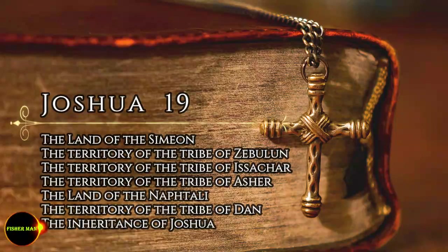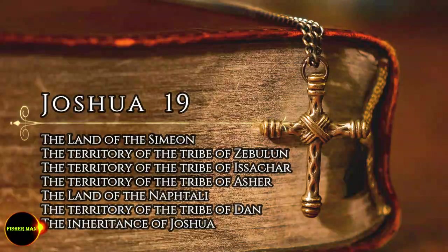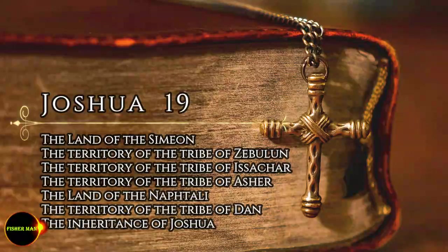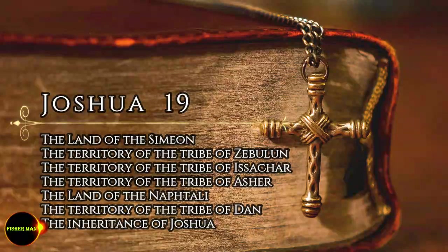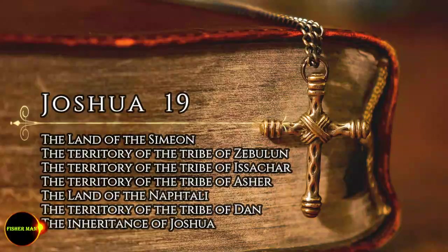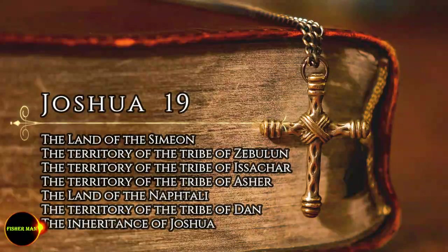Included were Kadath, Nehalal, Shemron, Idola, and Bethlehem. There were twelve towns and their villages. These towns and their villages were the inheritance of Zebulun, clan by clan.